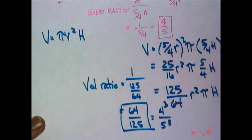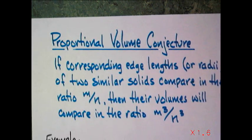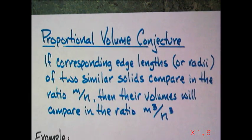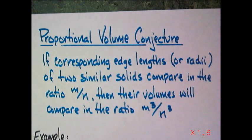So, what you thought was true indeed is true, that the proportional volume conjecture states that if corresponding edge lengths or radii of two similar solids compare in the ratio of m to n, then their volumes will compare in the ratio of m cubed to n cubed.